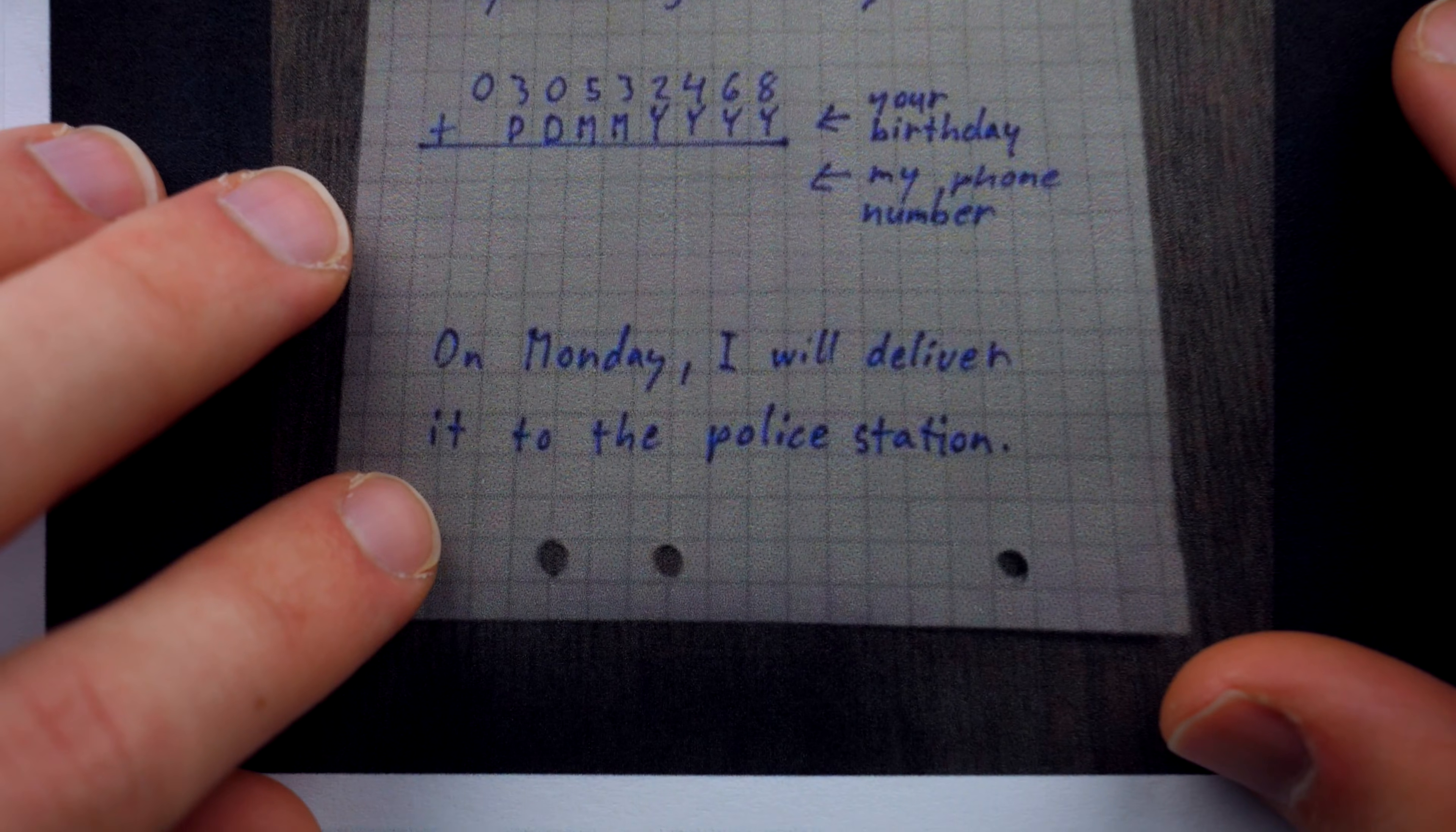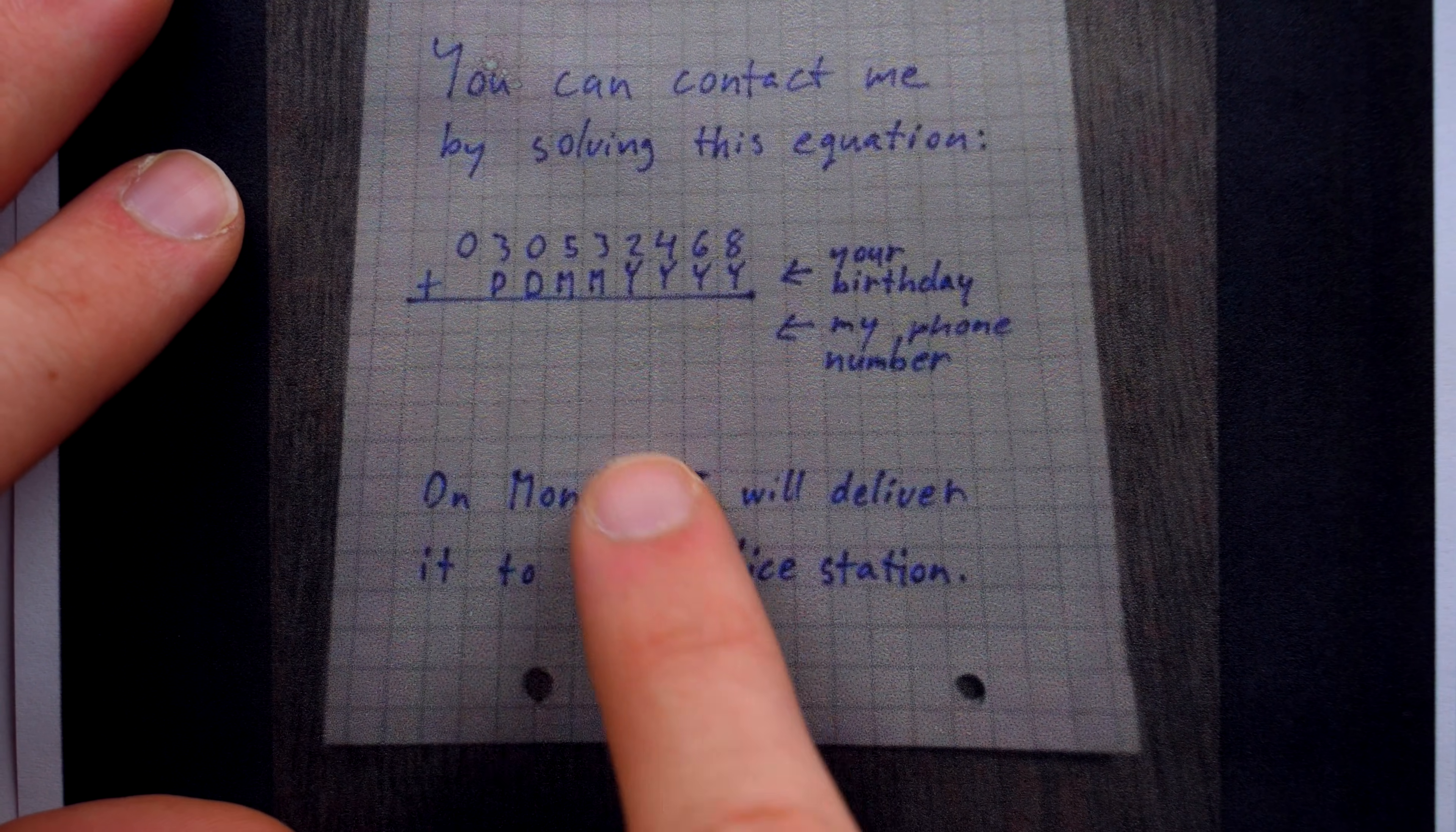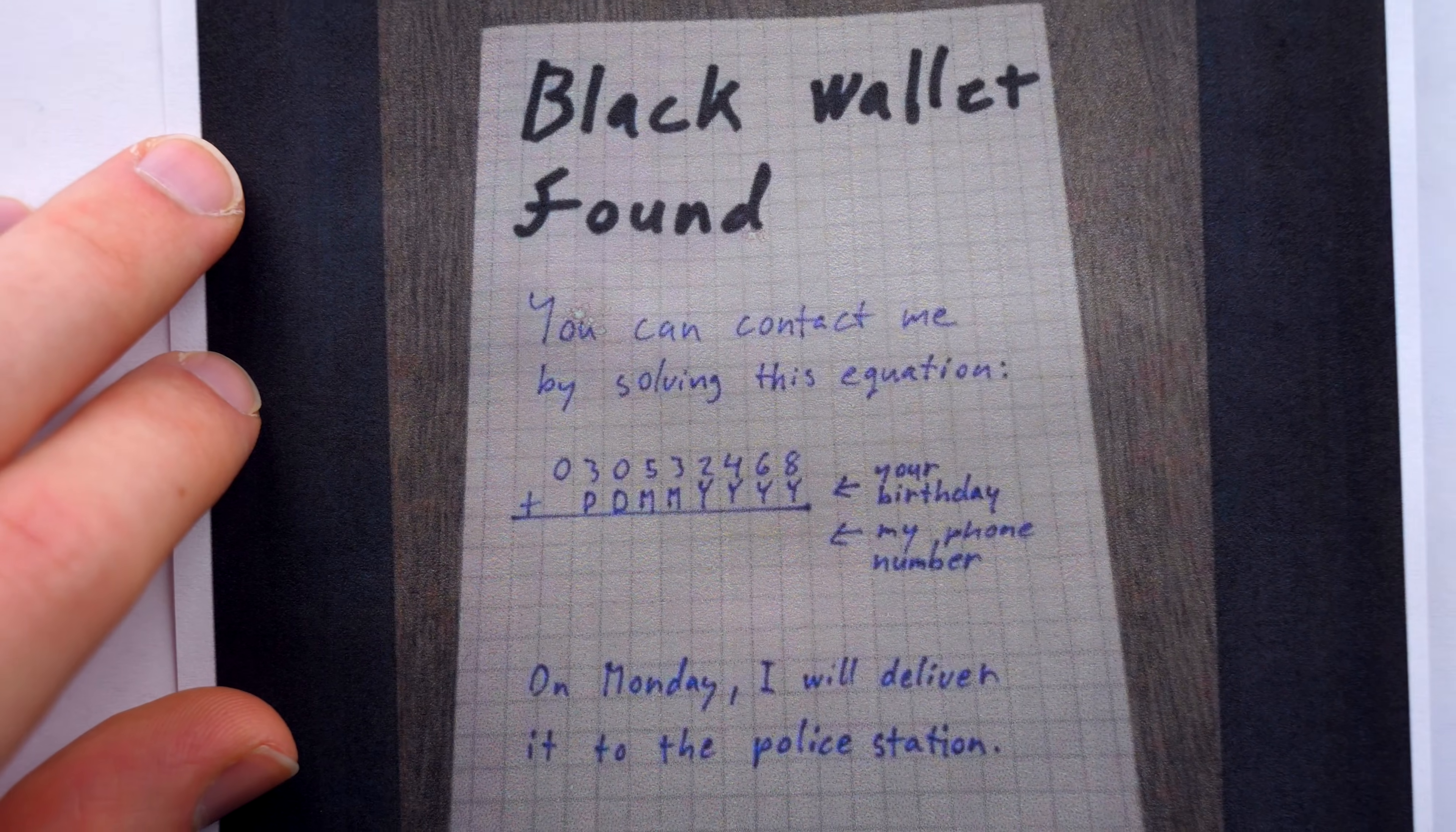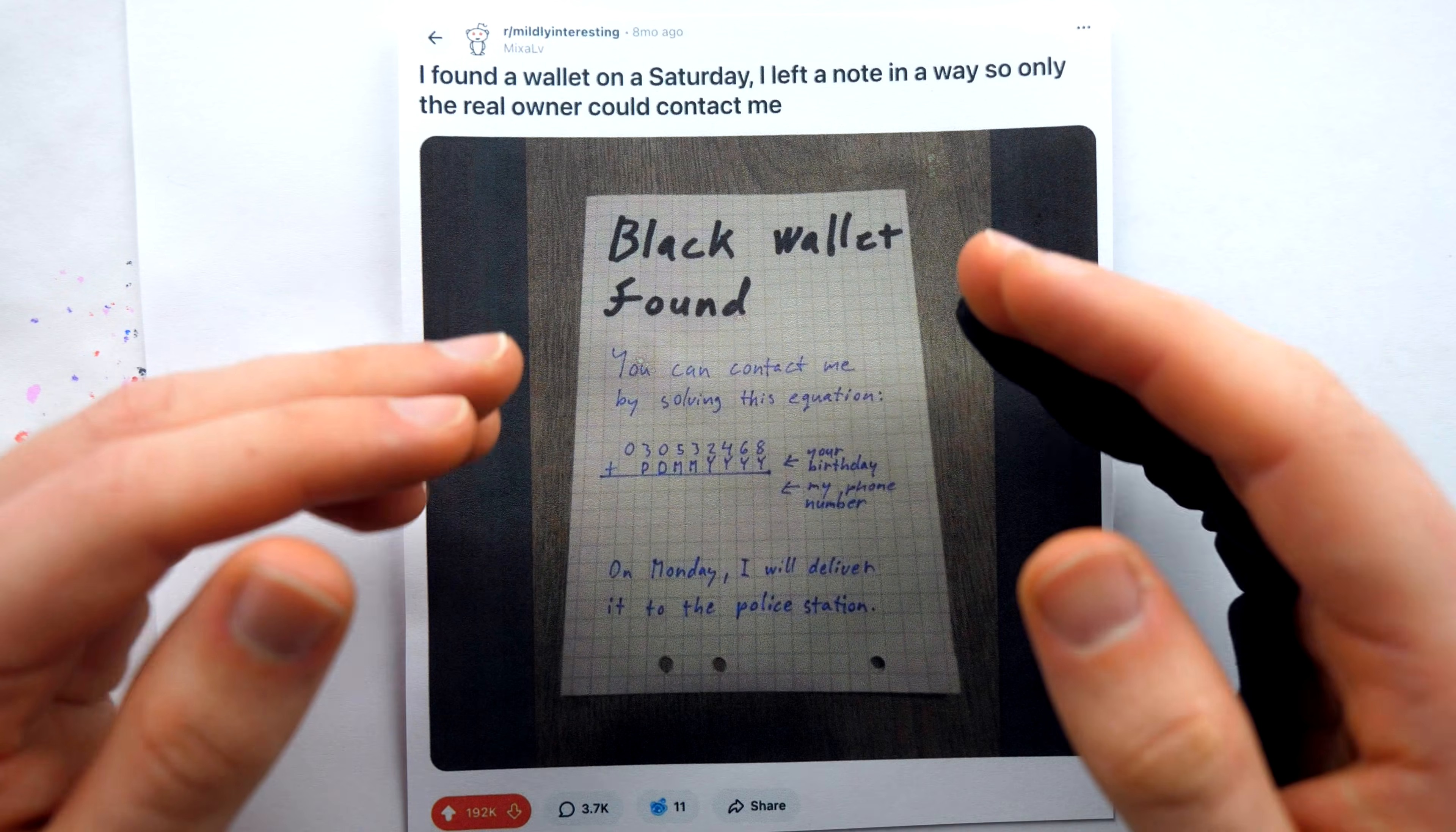Just how secure is this Riddler-esque ingenious secret code hack? Why did OP write a note like this in the first place instead of just using the address on the owner's ID to return the wallet or ship it? Or simply bring it to the police immediately instead of Monday? Why did OP put the days before the months in the birth date format? And what ended up happening anyways? Was the wallet returned? Did the rightful owner just go to the police station? Or did they solve the ingenious riddle of adding two numbers together? All that and more right now.